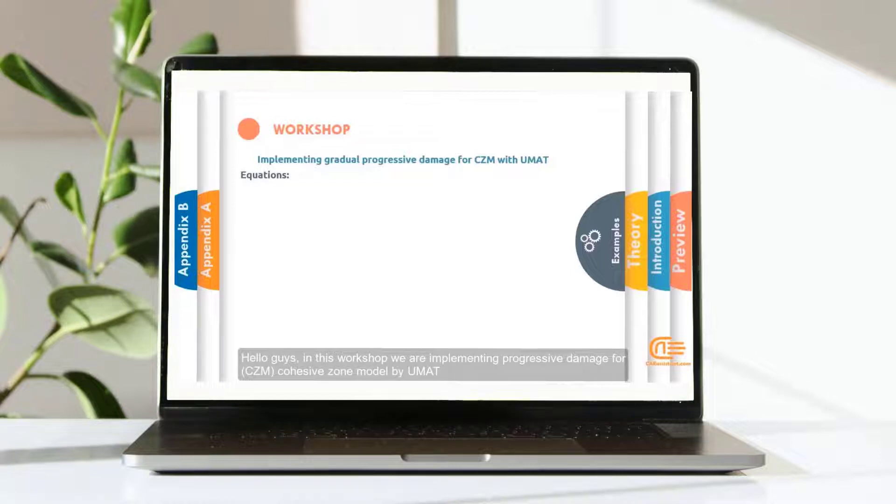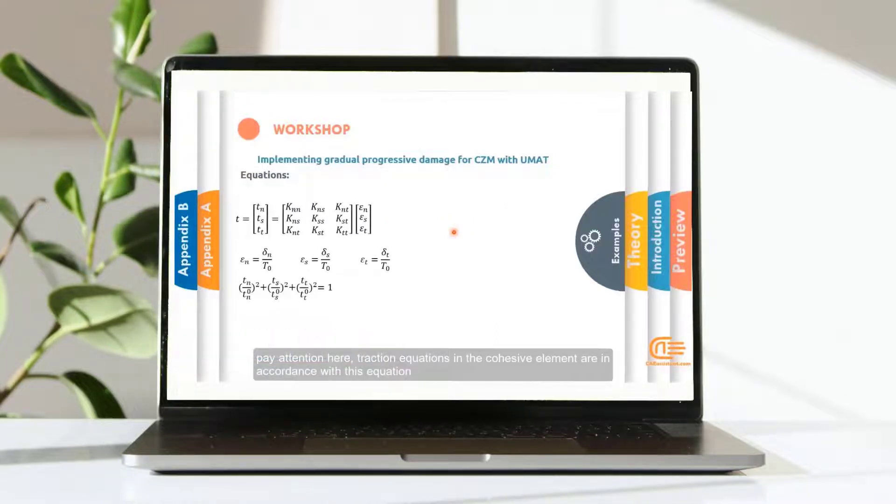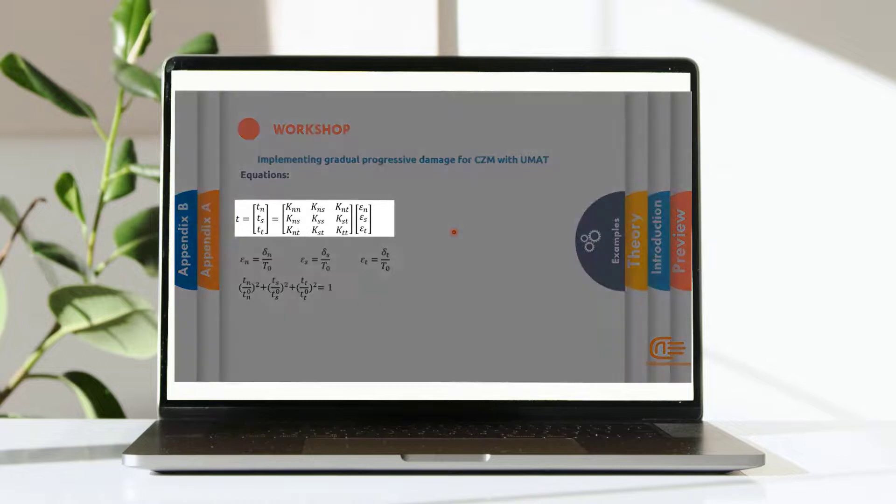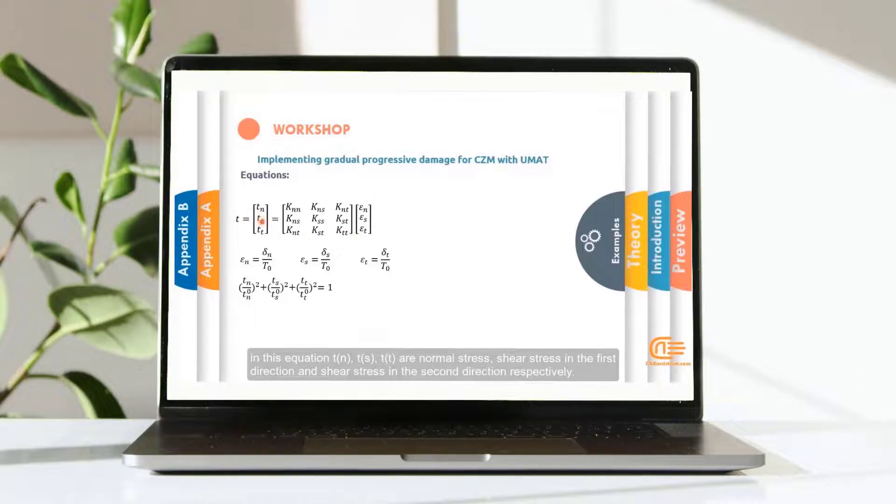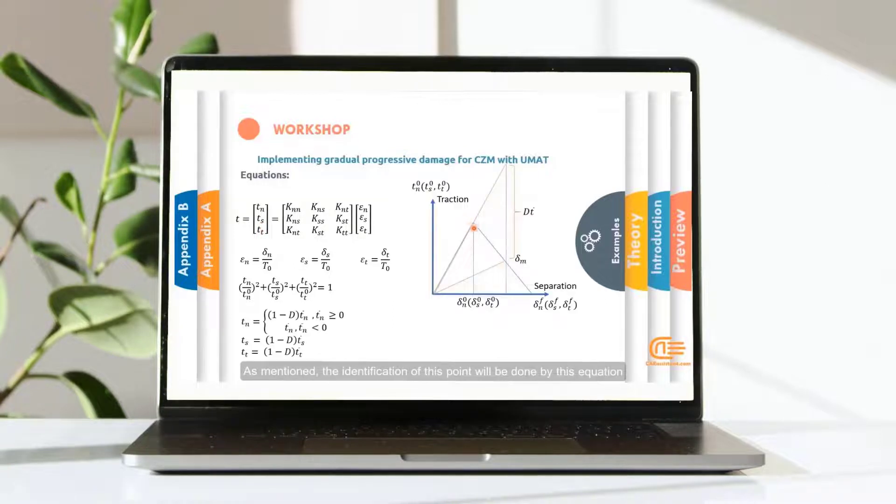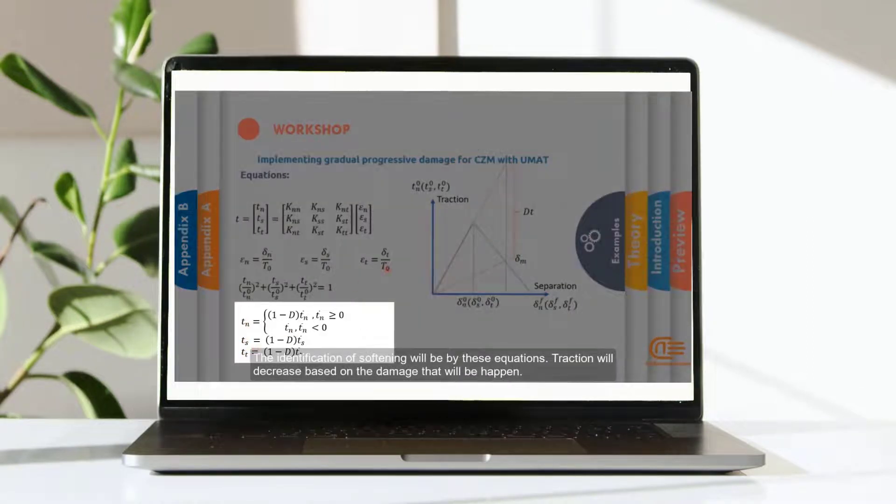Hello guys, in this workshop we are implementing Progressive Damage for CZM Cohesive Zone model by UMAT. Pay attention here, traction equations in the cohesive element are in accordance with these equations. In this equation, TN, TS, TT are normal stress, shear stress in the first direction and shear stress in the second direction respectively. As mentioned, the identification of this point will be done by this equation. The softening will be presented by these equations. Traction will decrease based on the damage that will be happening.